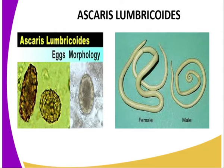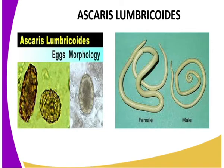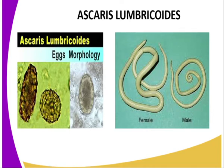Ascaris lumbricoides has adaptive characteristics which enable it to survive. First, it has two hosts — human beings and pigs — ensuring it always has a ready host for survival. Second, it may lay many eggs to increase the chances of survival even when some are destroyed. The eggs have a protective shell to survive harsh environmental conditions. It also has a thick elastic cuticle which protects it against the digestive enzymes of the host, enabling it to survive in the alimentary canal. It has tissues tolerant to low oxygen concentration, which is characteristic of the gut. It also has a muscular pharynx through which it sucks digested food from the host's intestine into its own gut.